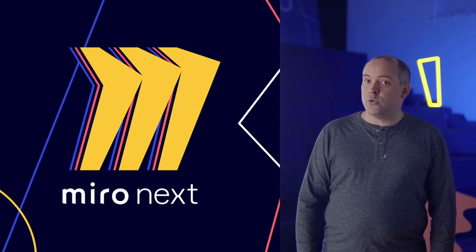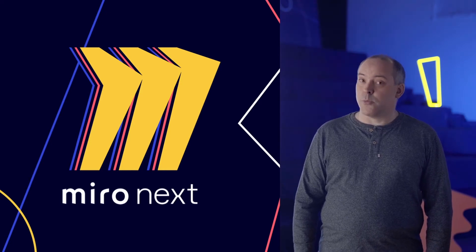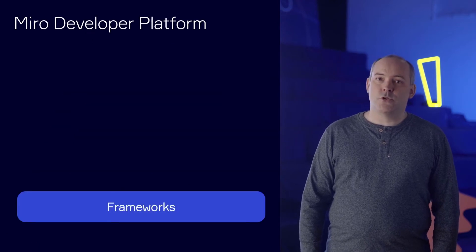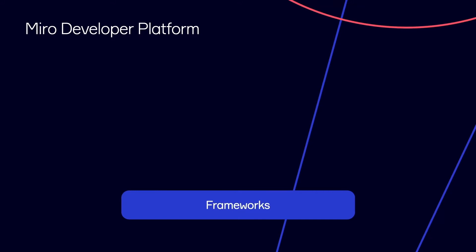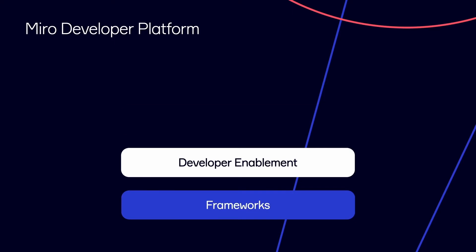Today we're excited to announce a new next generation platform along with several new showcase integrations from our partners. The Miro developer platform version 2 is a suite of frameworks, content and services that unlock unlimited new ways to use Miro, combined with a world-class developer experience and the tools needed to deploy apps across your organization. Miro is the only visual collaboration platform that enables development of both user-facing applications and server-side integrations combined with full enterprise readiness.